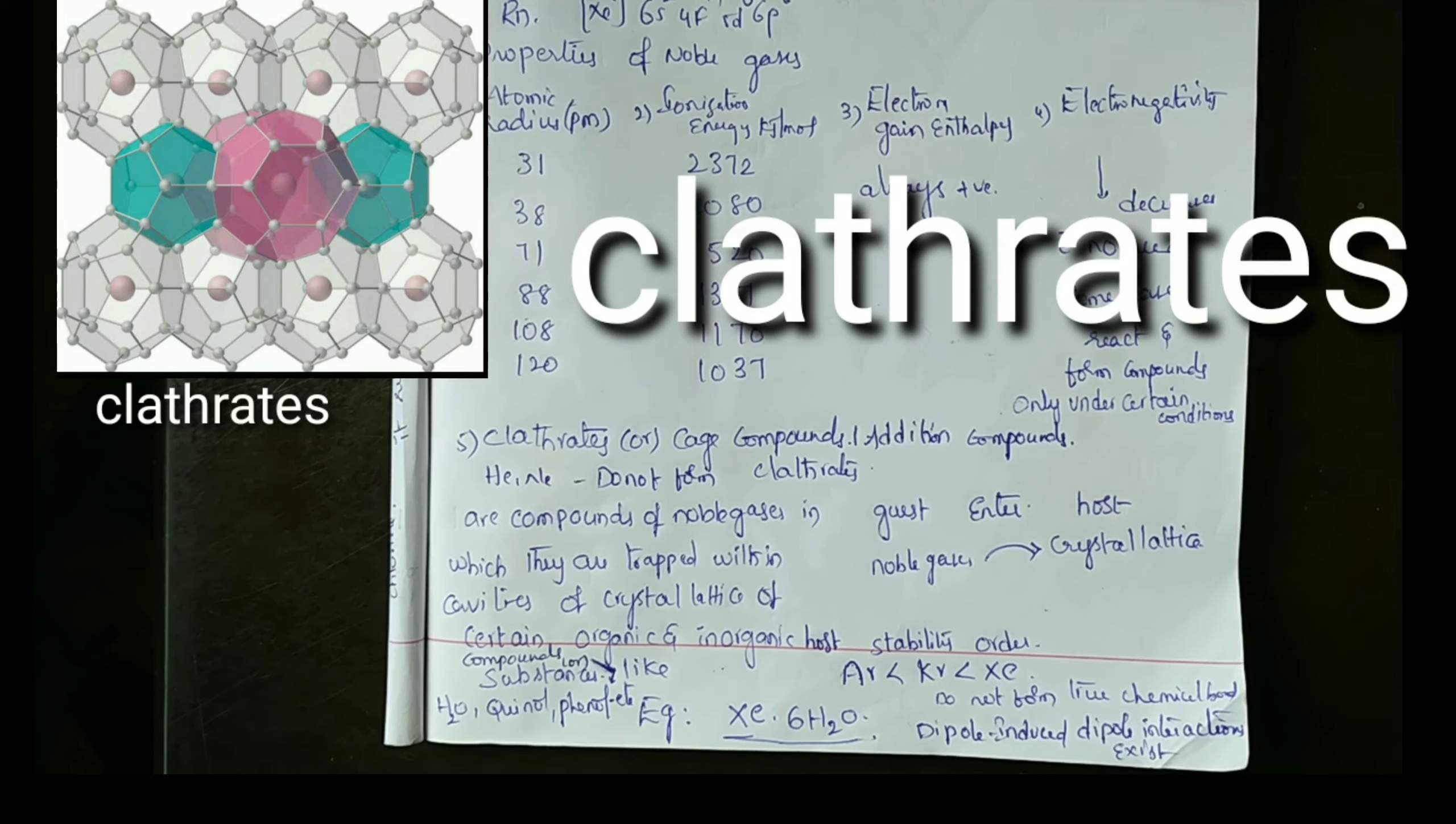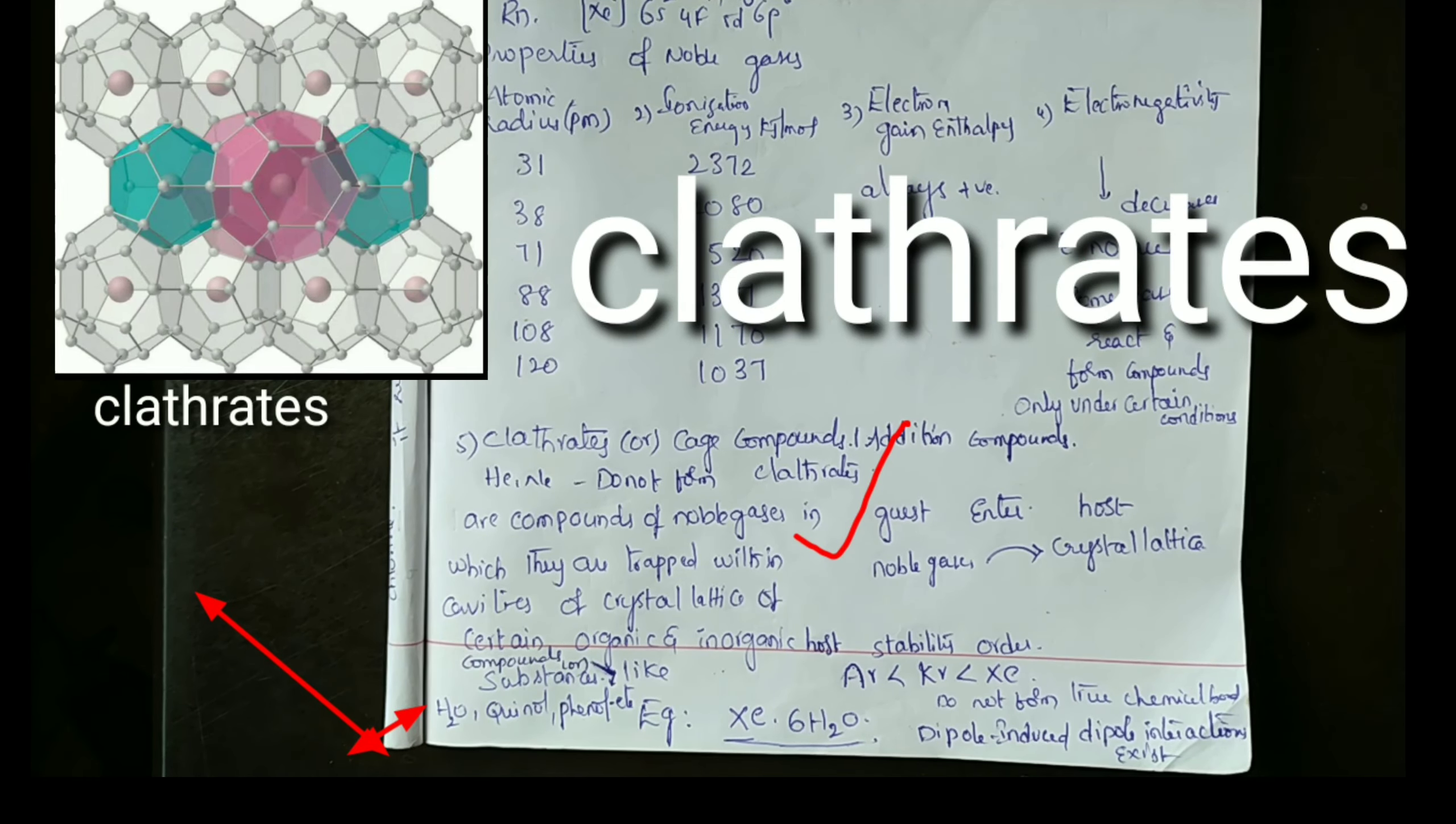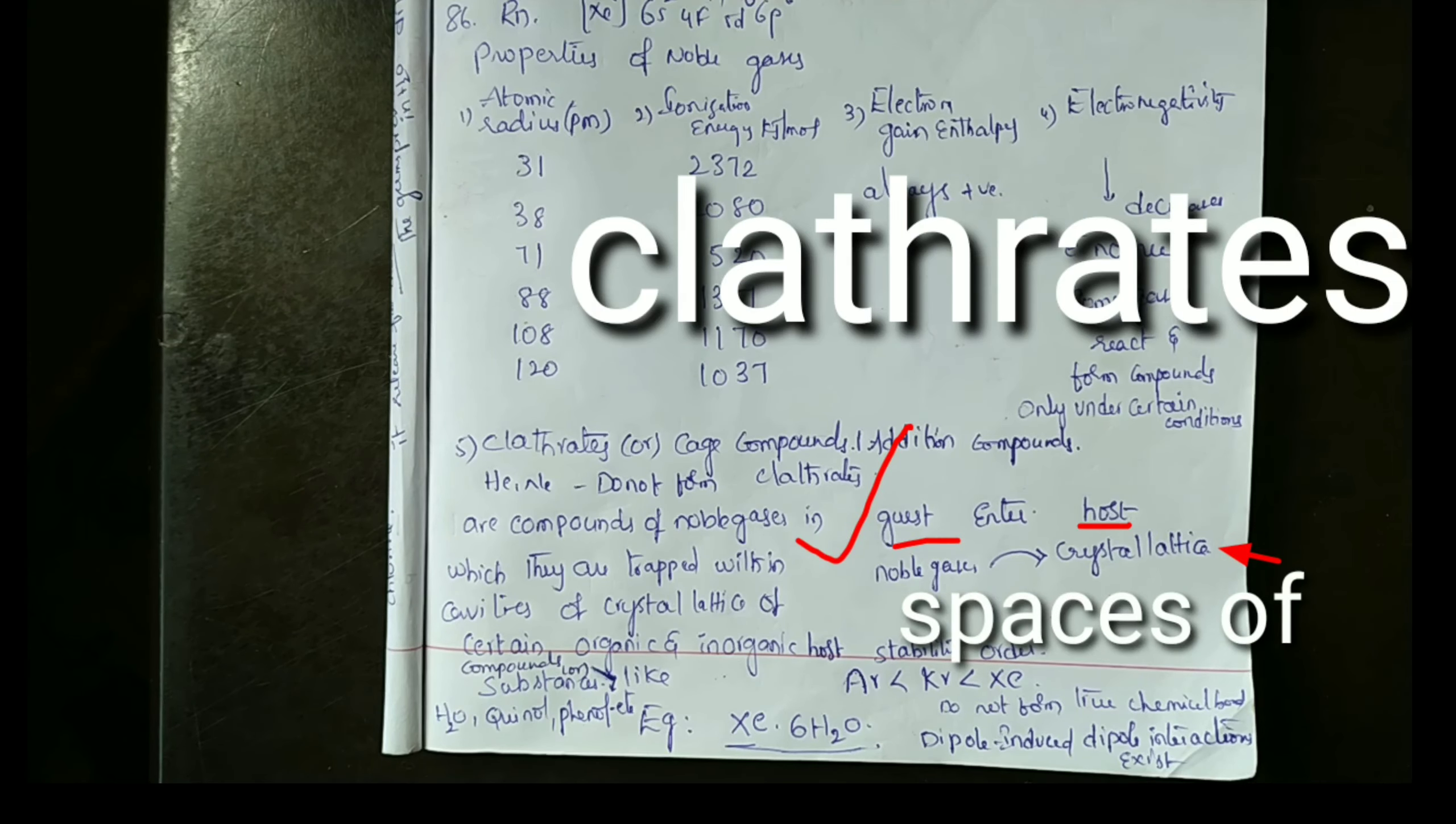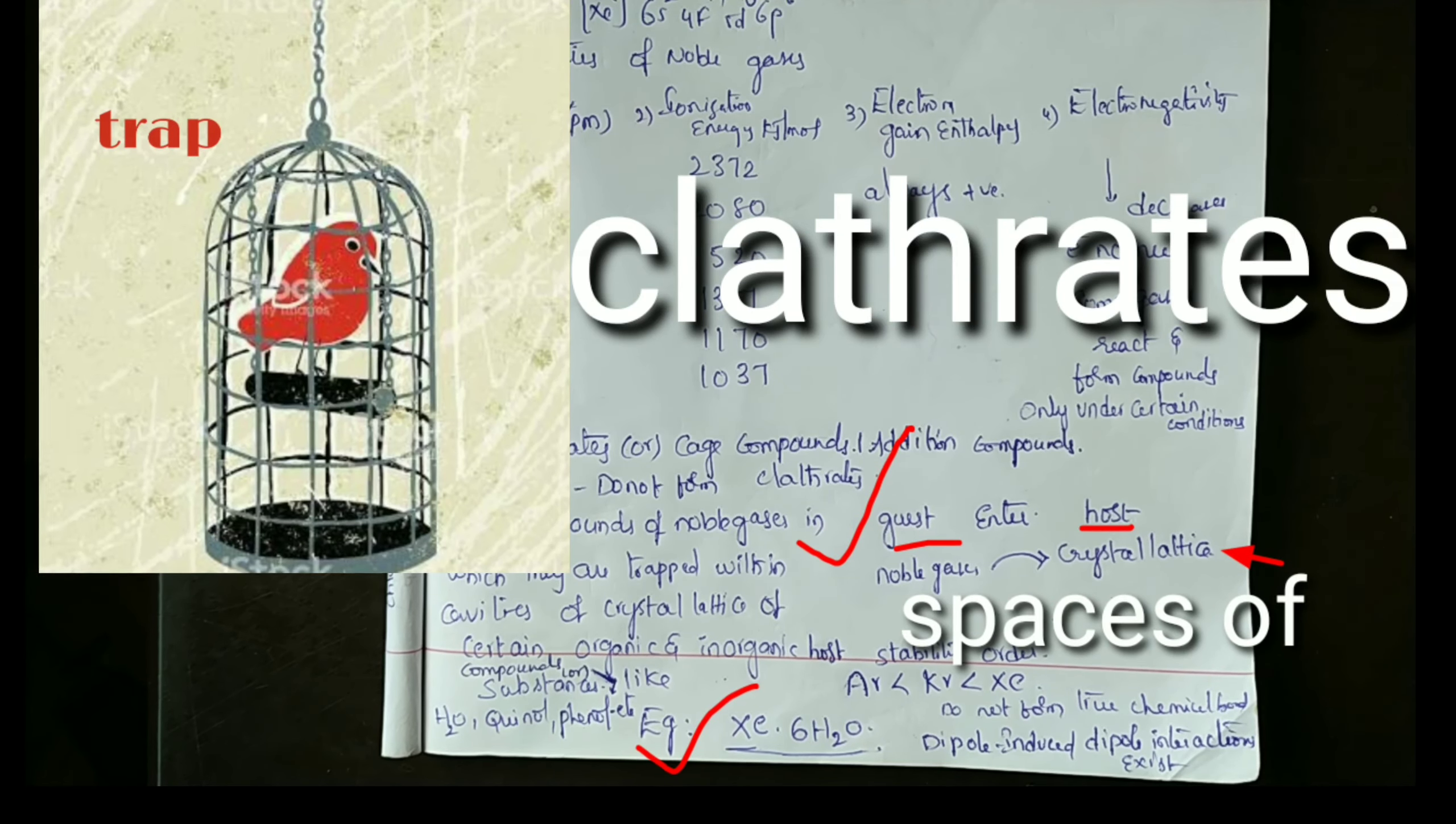In clathrates, guest elements like noble gases are entered into host compounds of crystal lattices like a bird trapped in a cage.